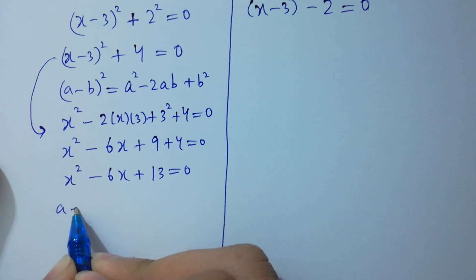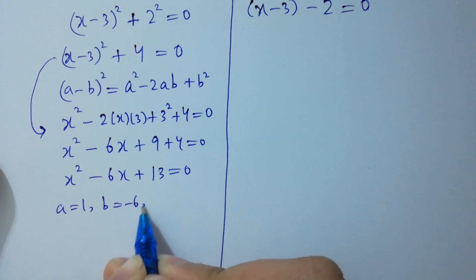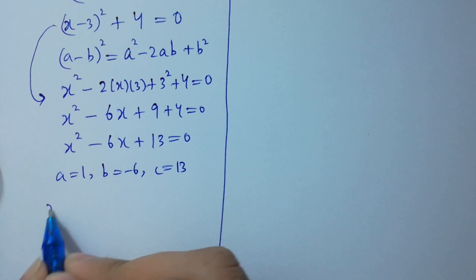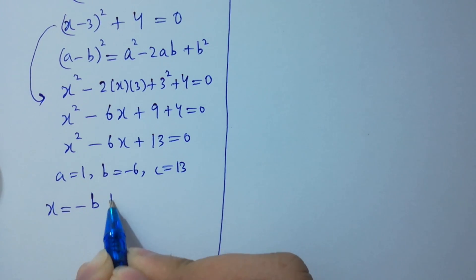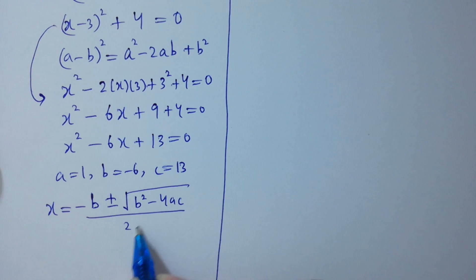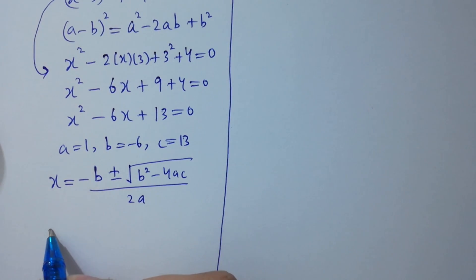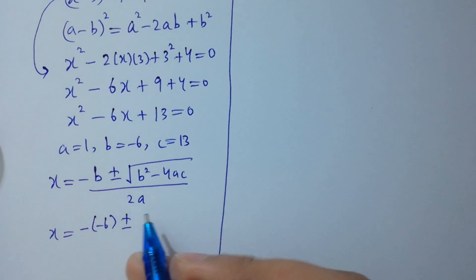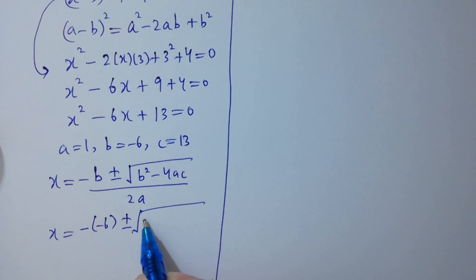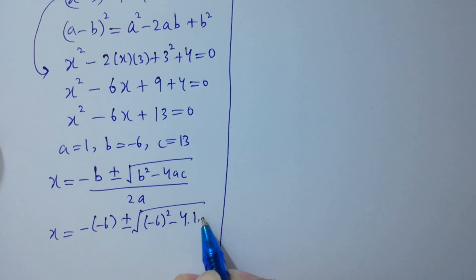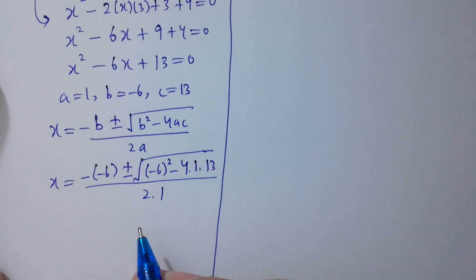Where a equals 1, b equals minus 6, c equals 13. Apply the quadratic formula: x equals (minus b plus or minus square root of b^2 minus 4ac) over 2a. Putting the values: x equals (6 plus or minus square root of (minus 6)^2 minus 4 times 1 times 13) over (2 times 1).